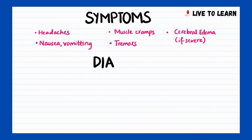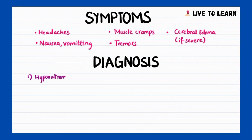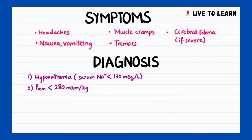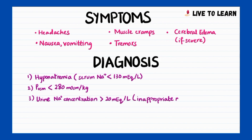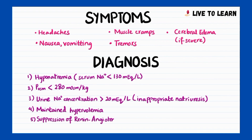The diagnosis involves blood and urine tests which reveal hyponatremia with serum sodium being less than 130 mEq per litre, plasma osmolality being less than 280 mOsmol per kg, and urine sodium concentration greater than 20 mEq per litre, i.e. inappropriate natriuresis. There is maintained hypervolemia, suppression of the renin-angiotensin-aldosterone system, and low blood urea nitrogen as well as low serum uric acid.